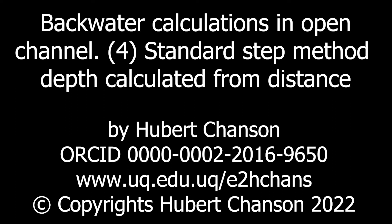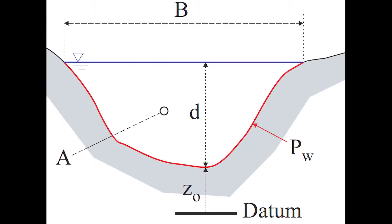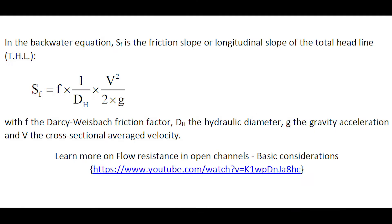The longitudinal free surface profile of gradually varied open channel flow is called the backwater profile. It may be predicted using the backwater equation, which is often rewritten in a finite difference form, with H the total head and E the specific energy. The following sketch illustrates the definition of the cross-section area, free surface width, and wetted perimeter. In the backwater equation, SF is the friction slope, or longitudinal slope of the total head line.